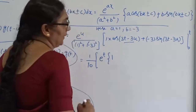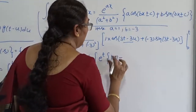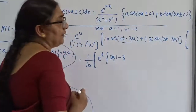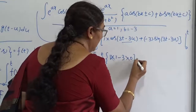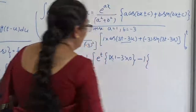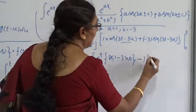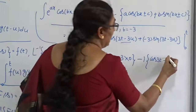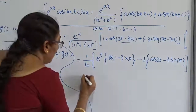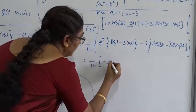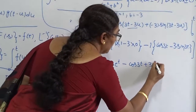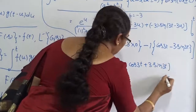At upper limit u = t: we get e to the power t times [1 times 1 + (minus 3) times 0] = e to the power t. At lower limit u = 0: e to the power 0 = 1, cos(3t) remains as cos 3t, and sin(3t) remains as sin 3t. Therefore the final answer is 1/10 times [e to the power t minus cos 3t plus 3 sin 3t].